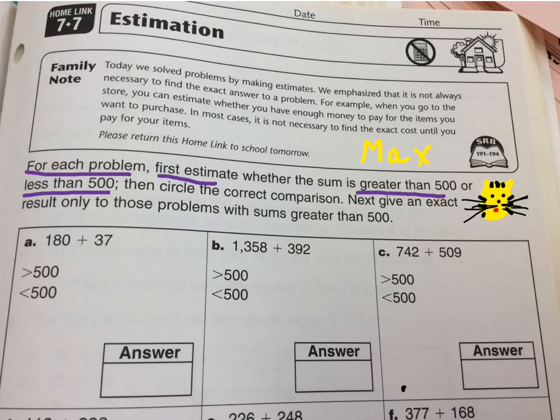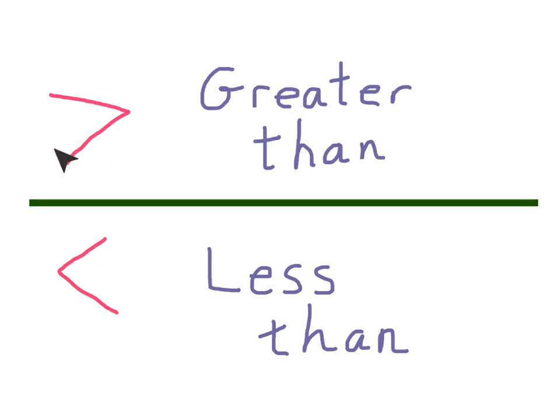We should know what that means. Let's review the symbols though. Here we have greater than, and here is less than. So pay attention to that when you're estimating these. That's greater than, less than.